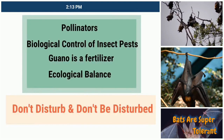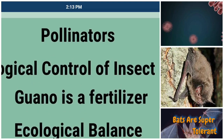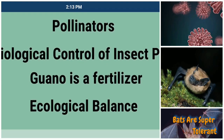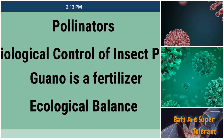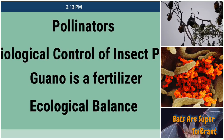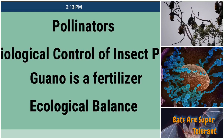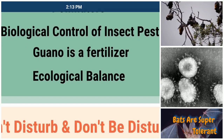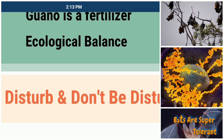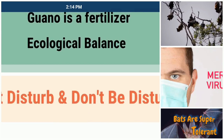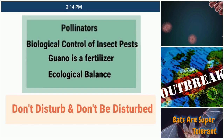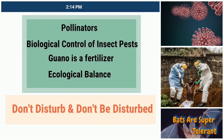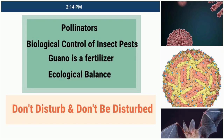Despite all these harmful effects, bats are one of the biggest pollinators, resulting in formation of fruits and grains. They are also useful in biological control of insects. So do not disturb bats, and conservation of nature and forests means we also will not be disturbed.